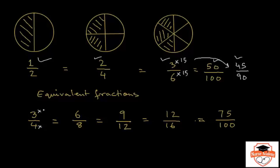For example, if you multiply with 2 you get three times 2 is 6 and four times 2 is 8. If you multiply them with 3 you get three times 3 is 9 and four times 3 is 12. If you multiply them with 25 — you can multiply with any number as long as the number you're multiplying with is the same — so three times 25 is 75 and four times 25 is 100. So they are all equivalent.